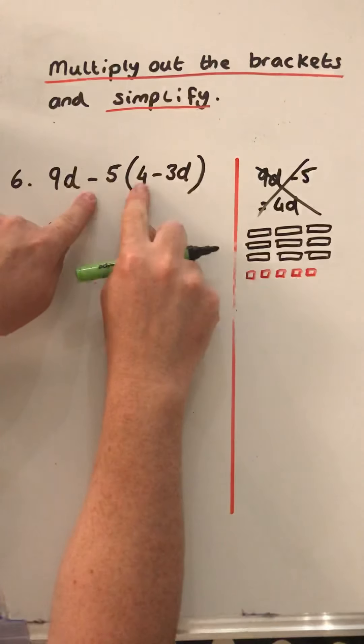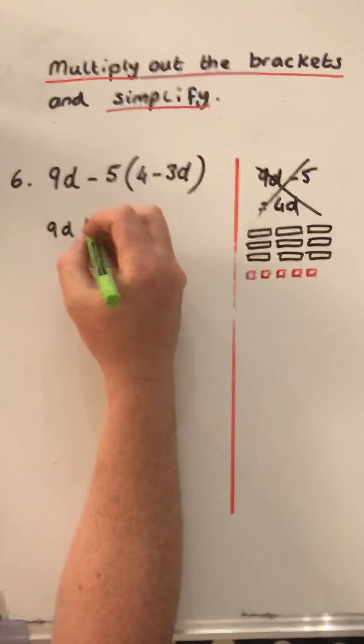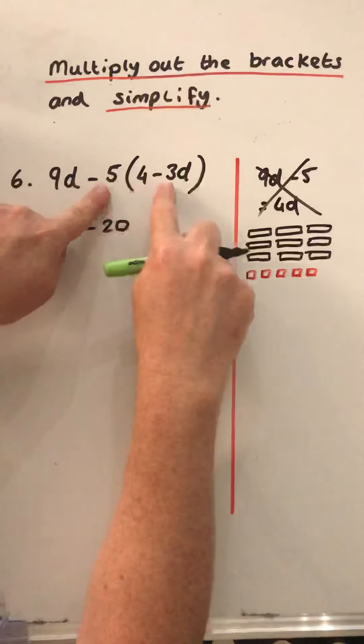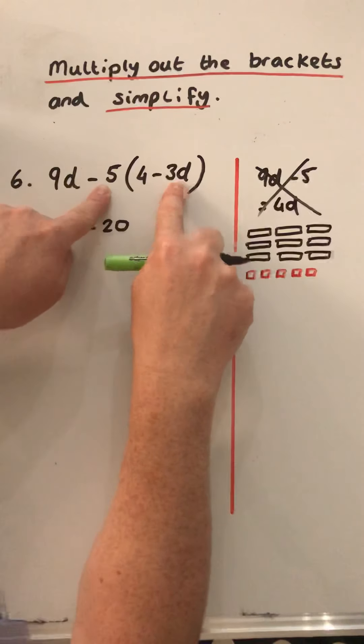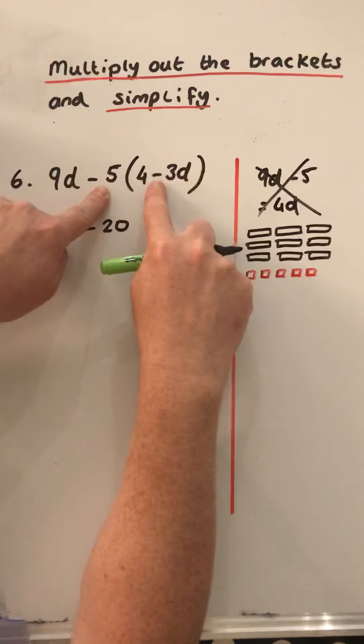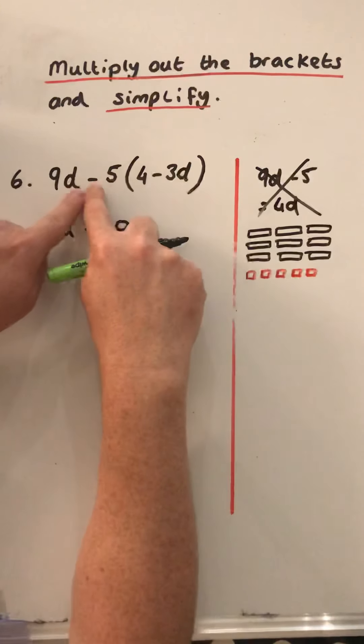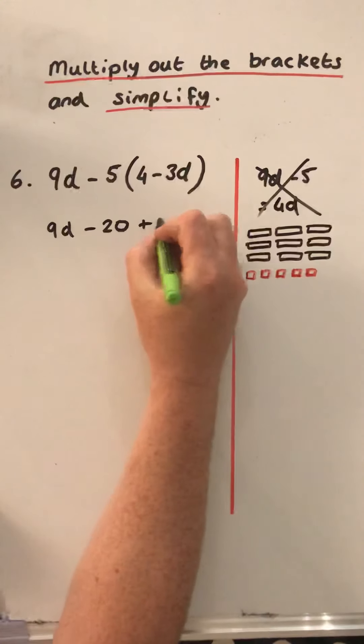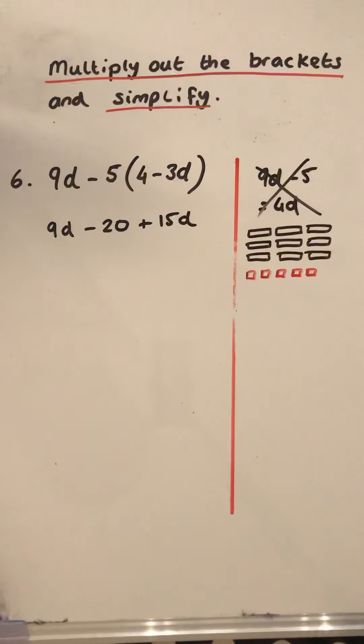We've got 5 groups of 4, which is 20. Negative 5 groups of 4 is negative 20. 5 groups of 3 is 15. 5 groups of 3d is 15d. 5 groups of negative 3d is negative 15d. Negative 5 groups of negative 3d is positive 15d.